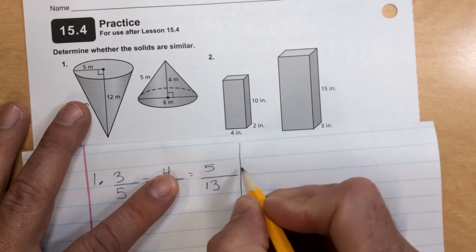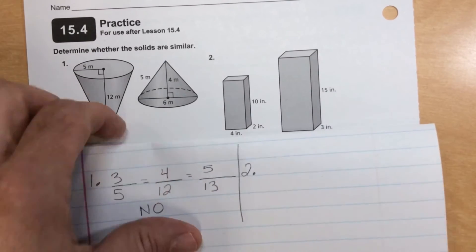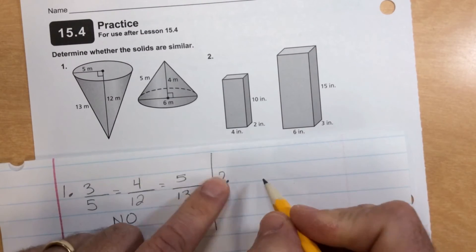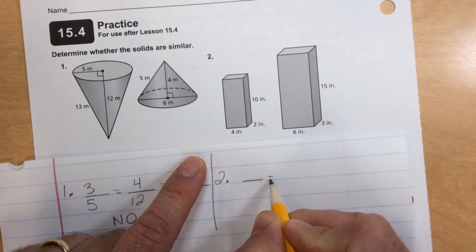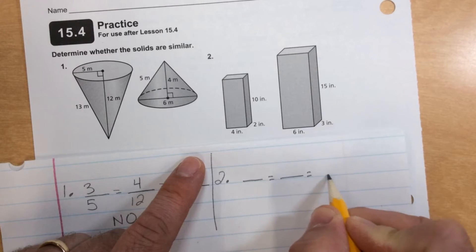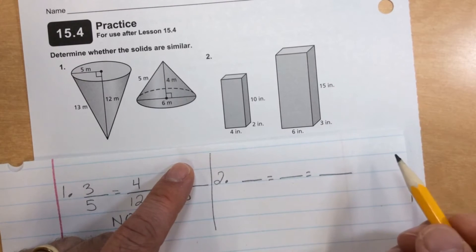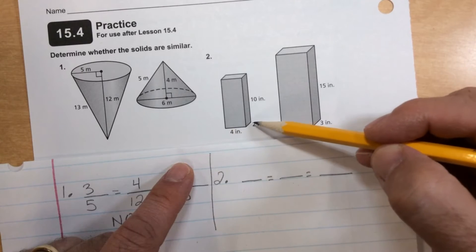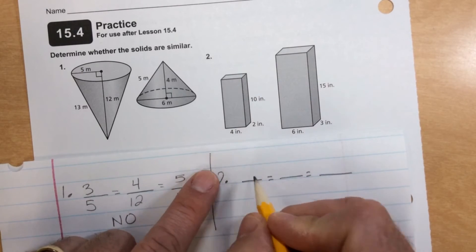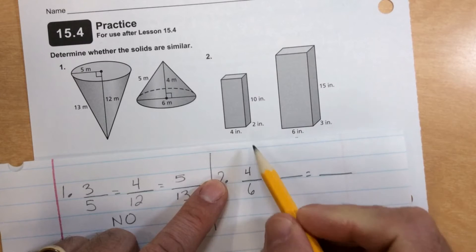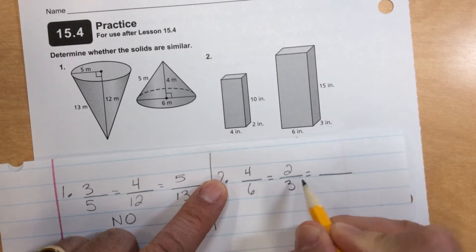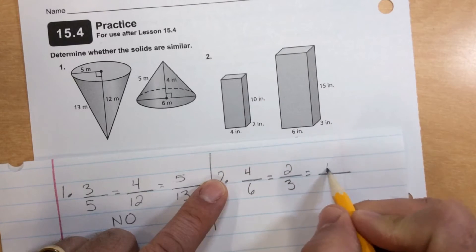So looking at number two here, just the way these worksheets usually go, I'm going to guess this one's a yes, but we got to try it. Again, they give us three dimensions. So we'll go length and width and height. So length, four over length, six. Width, two over width, three. Height, 10 over height, 15.